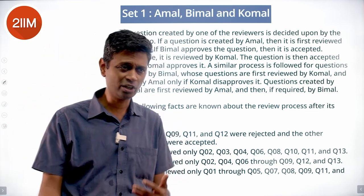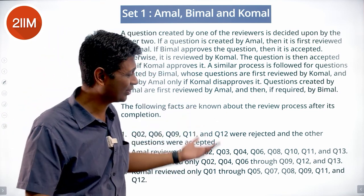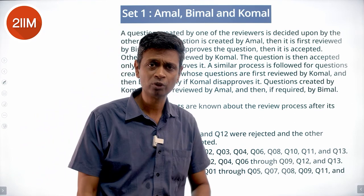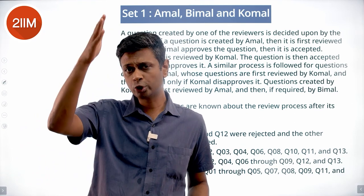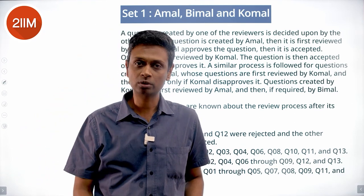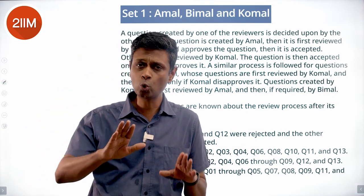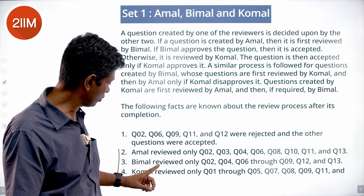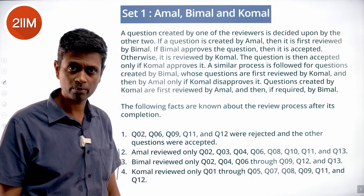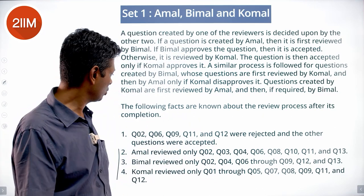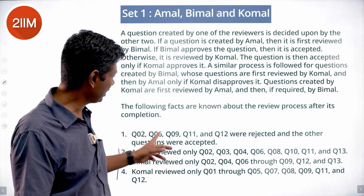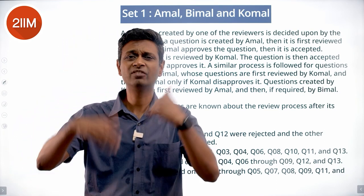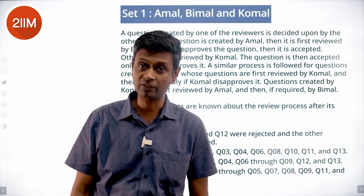We are going to organize this data by putting Q1 to Q13 in a grid and noting who reviewed each question. We'll record what Amal, Bimal, and Komal each reviewed, mark what has been accepted or rejected, and then make inferences from there.